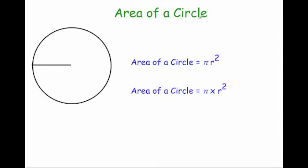In this video we're going to look at how to find the area of a circle. The area of a circle is given by the formula pi r squared. Just remember that whenever you're working this out you square before you multiply. So you square the radius and then times it by pi.